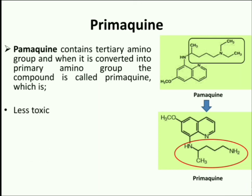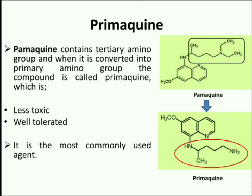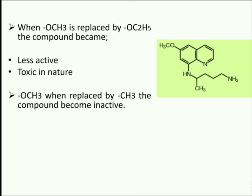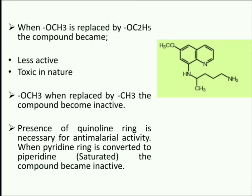Primaquine is less toxic and well tolerated as compared to Pamaquine, and it is the most commonly used. Although the methoxy group at the 6th position is not essential, when it is replaced with an ethoxy group it results in a less active and toxic compound, and when replaced with a methyl group the compound becomes inactive. In another attempt, when the pyridine ring is converted to piperidine, which is the saturated form, the compound also became inactive. This suggests that the quinoline ring is essential for antimalarial activity.